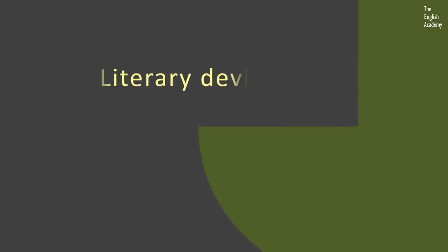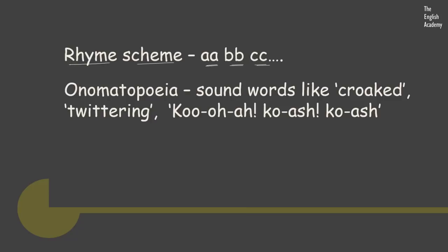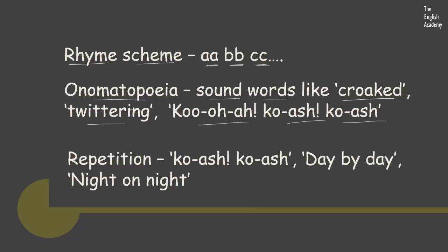Now we will see the literary devices used in this poem. The first is the rhyme scheme, which runs throughout the poem as A-A-B-B-C-C. The next is onomatopoeia — the use of sound words. 'Croaked' is the sound made by the frog. 'Twittering' is the sound of the royal animals chatting. 'Ku-wa, ku-ash, ku-ash' is the sound made by the frog when singing and training the nightingale. Next is repetition, used to create a musical effect. 'Ku-ash ku-ash' is repeated, and 'day by day, night on night' is repeated to lay emphasis. In the first stanza, 'on' is repeated thrice to emphasize the continuity of the frog's song.